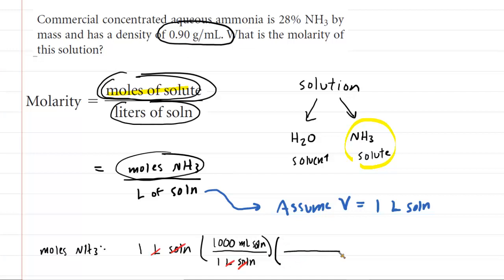By setting up the conversion factor this way, the liters of solution will cancel out, leaving us with just the milliliters of solution. Now we can use the density because we were told that we have 0.90 grams of solution for every 1 milliliter of solution. If you set up your conversion factor in this manner, then the milliliters of solution in the numerator and denominator will cancel out. We now have grams of solution. We're almost there, but our goal is to get moles of ammonia.